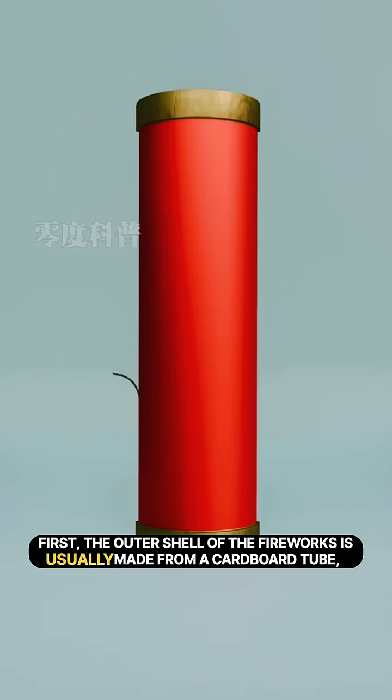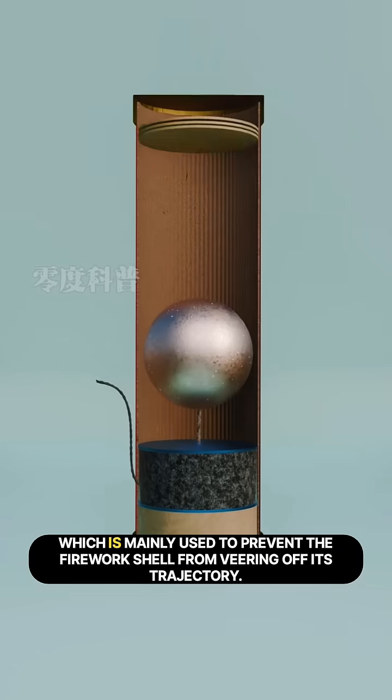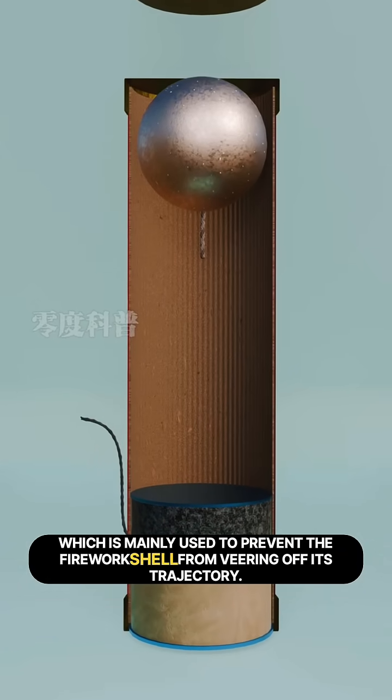First, the outer shell of the firework is usually made from a cardboard tube, which is mainly used to prevent the firework shell from veering off its trajectory.